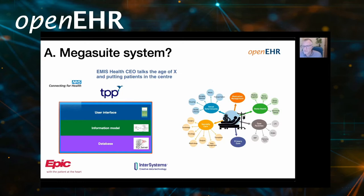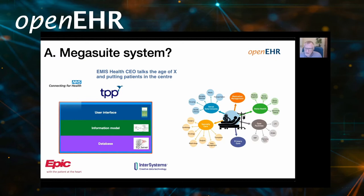How do we solve the problem? The obvious solution is just to buy one big system. Most of you will know that England had an attempt at that through NHS Connecting for Health. We see this partly happening through natural market forces with the advent of bigger and bigger mega suite systems. But in general, it's unlikely these will manage a fully coherent system, and of course we have the big disadvantage of commercial vendor lock-in. We lose control as a community, and there are real socio-political concerns about handing this over to an increasingly monopolistic environment.